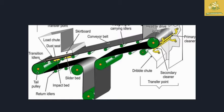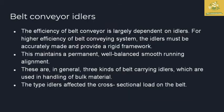In this picture you can see the transition idlers supporting the conveyor belt, primary cleaners where dust and minor particles are collected, and secondary cleaners which clean thoroughly. There is also a transfer point where the load or material is to be placed on the belt.